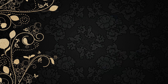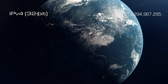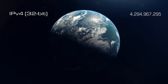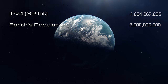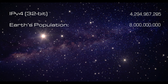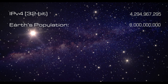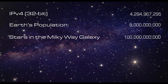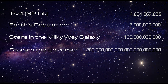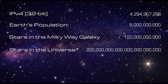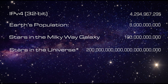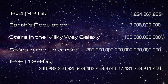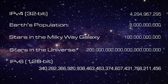Let's put that into perspective. There are nearly 4.3 billion unique IPv4 addresses, and some of these are reserved for special uses. Earth's population is approaching 8 billion people, so we don't even have enough IPv4 addresses for everyone. The Milky Way galaxy has about 100 billion stars — that's a drop in the bucket compared to the whole universe, which has about 200 billion trillion stars. There are 340 undecillion IPv6 addresses — that's about 1.7 million billion unique IP addresses for every star in the universe.